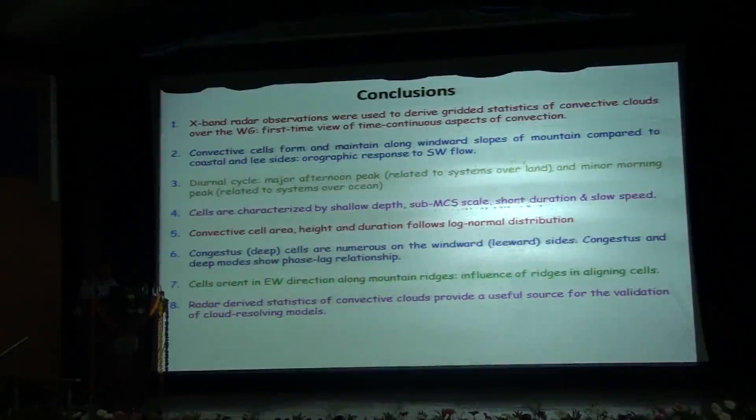I conclude by saying that X-band radar observations were used to derive the gridded statistics of convective clouds over the Western Ghats providing the first-time view of the time-continuous aspect of convection over the region. The convective cells formed and maintained along the windward slopes of the mountain compared to the coastal and lee sides which highlighted the orographic response to the southwesterly flow. The diurnal cycle showed a major afternoon peak and a minor morning peak which may be related to the systems over land and that over oceans respectively. Cells were characterized by shallow depths, sub-MCS scales, shorter duration and slow speeds. Convective cell area, height and duration followed log-normal distribution. The congestus cells were more numerous on the windward side and they had a clustering over the north-south mountain while deep cells were found to dominate over the lee side. The congestus and the deep modes showed a phase-lag relationship amongst themselves. Cells were found to orient in the east-west direction along the mountain ridges which showed the influence of ridges in aligning of the storms. Radar-derived statistics of convective clouds here provide useful sources for validation of cloud-resolving models.